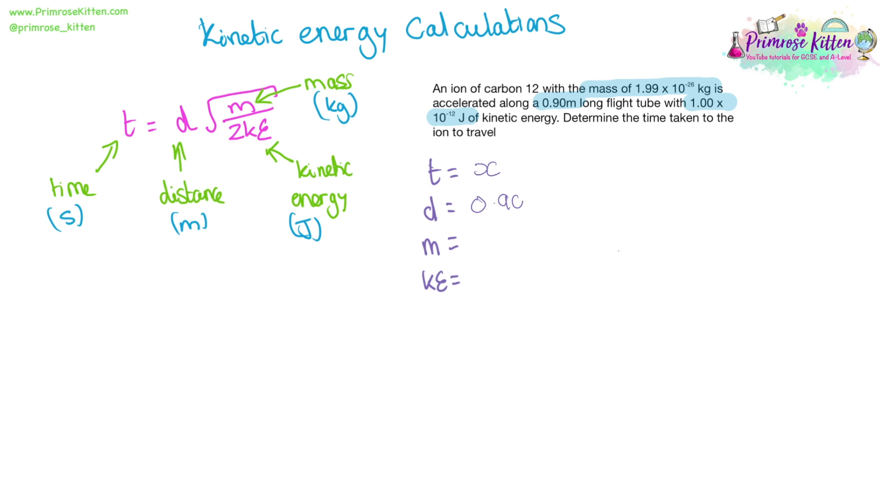So I've taken all of the letters from the equation and I've just written them down over here. And now I'm going to go through the question and highlight all of the important bits and work out where they need to go. So T time, that's the bit we're looking for. Distance is 0.90. Mass is 1.99 times 10 to the minus 26 and kinetic energy is 1.00 times 10 to the minus 12 joules. Now I have all of the information I need clearly in a box here. I don't have to worry about going back to the question to pull out the information when I need it. If there's anything that needs converted, this is a nice easy stage to do it at. Doing this makes it a lot easier to put the numbers into the equation. So for D we've got 0.90 square rooted just replacing the letters with the appropriate numbers that we have pulled out.